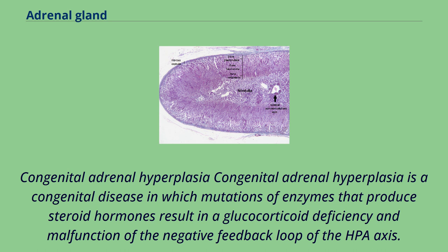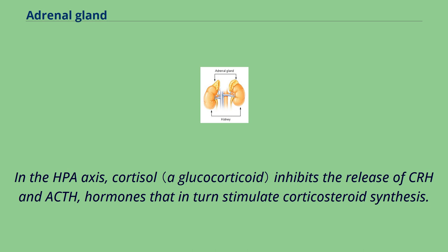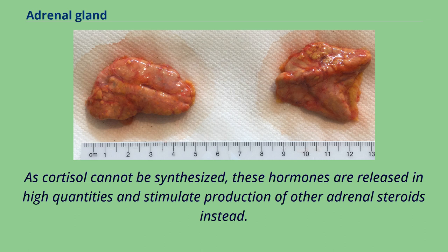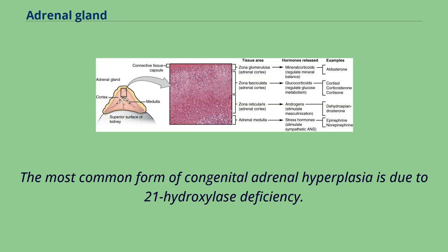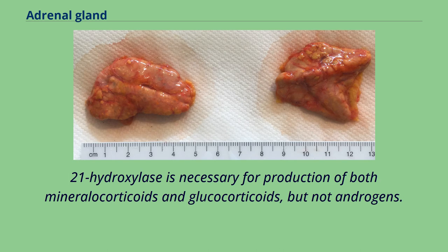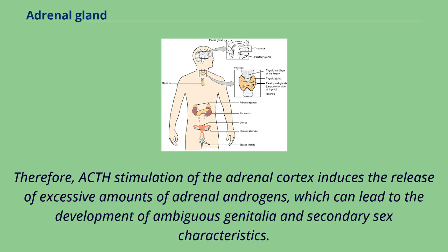Congenital adrenal hyperplasia is a congenital disease in which mutations of enzymes that produce steroid hormones result in a glucocorticoid deficiency and malfunction of the negative feedback loop of the HPA axis. In the HPA axis, cortisol inhibits the release of CRH and ACTH, hormones that in turn stimulate corticosteroid synthesis. As cortisol cannot be synthesized, these hormones are released in high quantities and stimulate production of other adrenal steroids instead. The most common form of congenital adrenal hyperplasia is due to 21-hydroxylase deficiency. Since 21-hydroxylase is necessary for production of both mineralocorticoids and glucocorticoids but not androgens, ACTH stimulation of the adrenal cortex induces the release of excessive amounts of adrenal androgens, which can lead to the development of ambiguous genitalia and secondary sex characteristics.